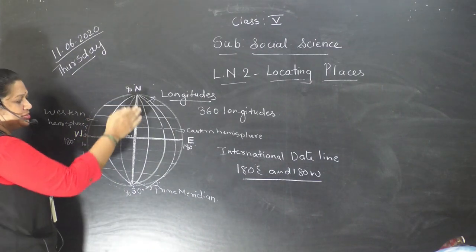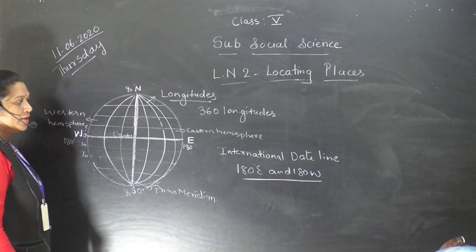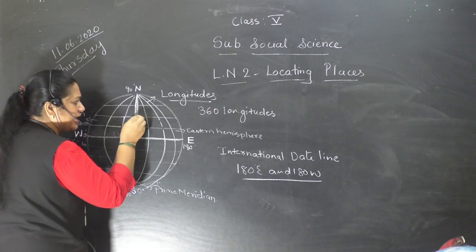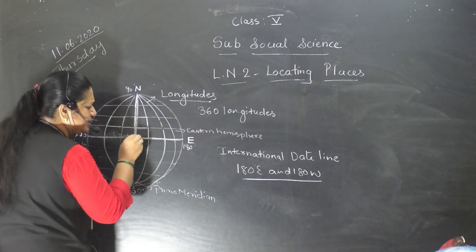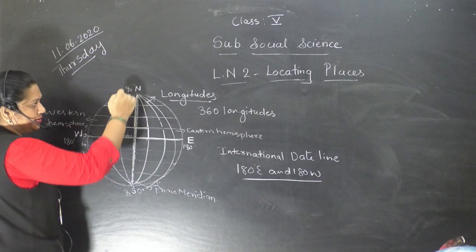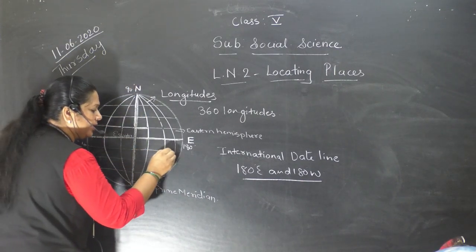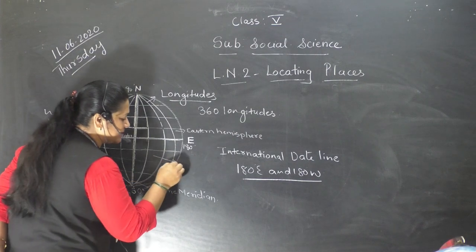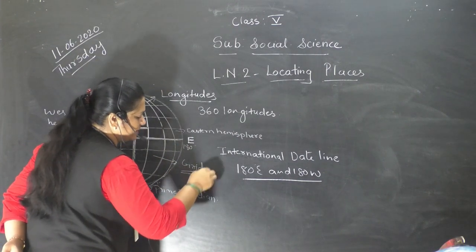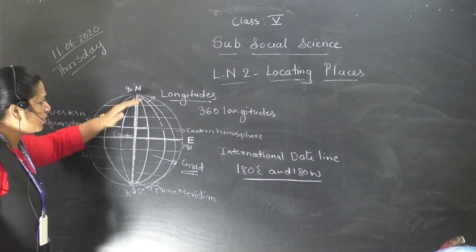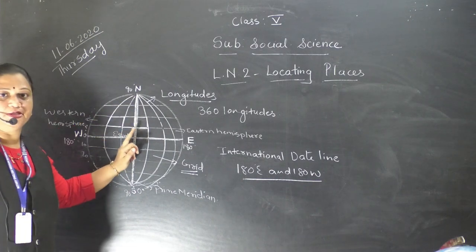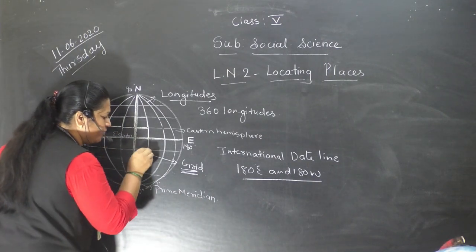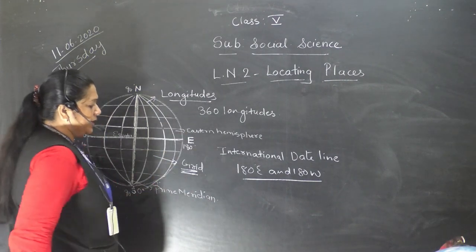Now one more thing you can see on the globe — can you see some small squares are formed? The latitudes and the longitudes on the globe form a network of lines. The intersection of the latitudes and longitudes forms the grid. So this network which is formed is called the grid.